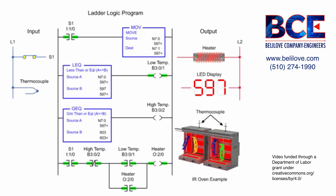In this on-off temperature control example, the heater turns on when the temperature falls to or below 597 degrees, and turns off when the temperature reaches 603 degrees or more.